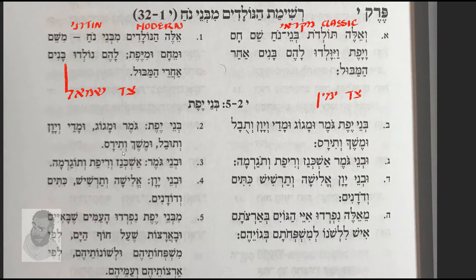Uvne Gomer: Ashkenaz, We Rifath, We Sorganmah. Uvne Yawan: Elisha, We Sarshish, Kittim, We Zodanim. Ni Benel Yefeth Nifrezu Ha Amim She Bayim U Va Arsos She Al Khof Hayyam, Le Fi Mishpechothahem, Ul Shenosahem, Le Fi Arsosahem, Wa Ammehem.